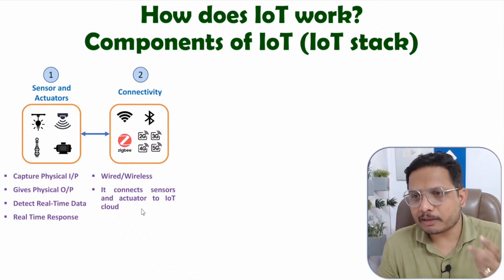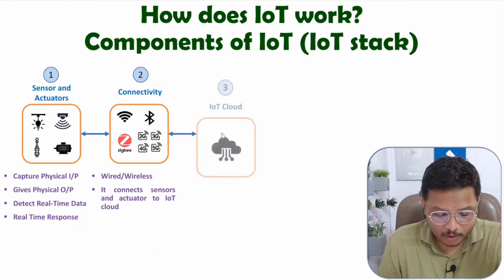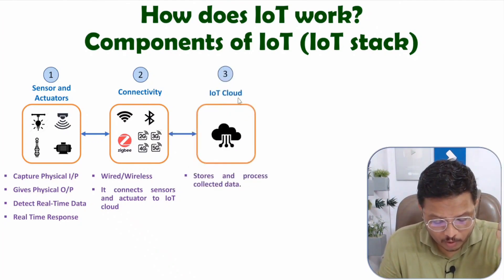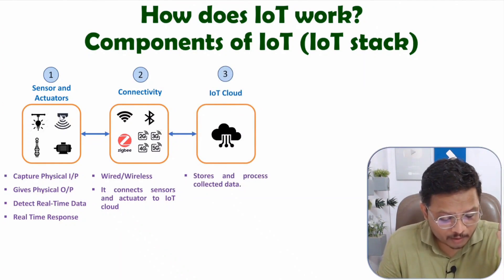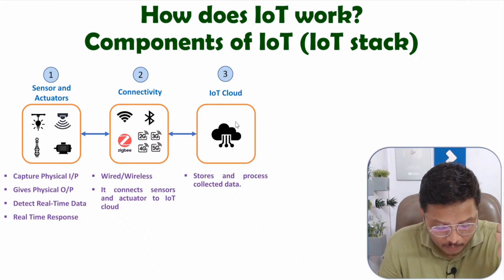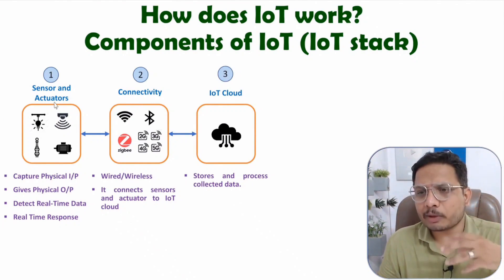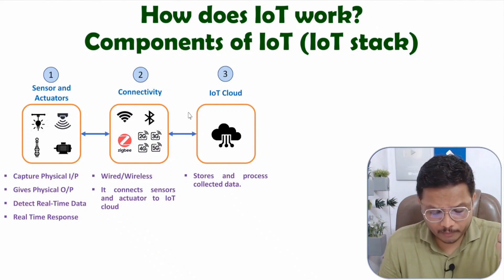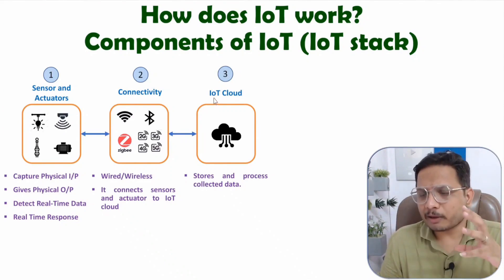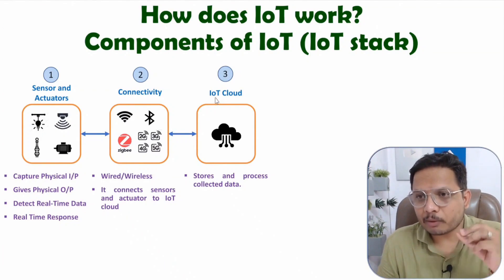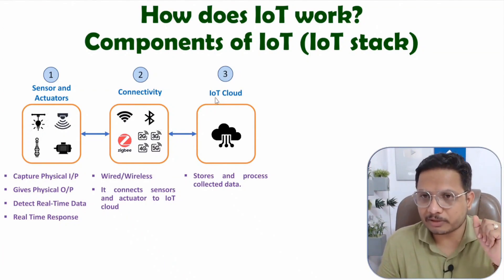The third component is the IoT cloud. In the IoT cloud, we store and process data. We receive data from the sensor through connectivity, process that data, and based on the processing, we provide a response. That response is sent to the actuator, which then acts on it. Remember, the IoT cloud is not a compulsory block in the IoT ecosystem.